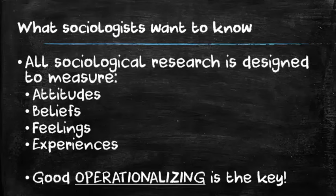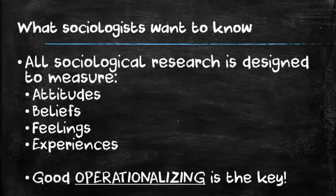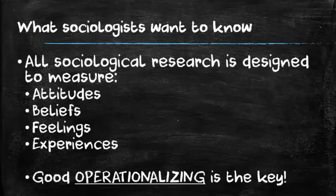I want you to remember that all sociological research is designed to measure four things: attitudes, beliefs, feelings, and experiences. Good operationalizing is the key so that your reader can fully understand exactly what it is you've tried to measure.